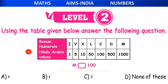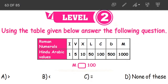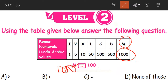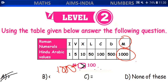Using the table given below, answer the following question. M dash 100 — we are comparing M with 100. M is 1000. Since 1000 is the bigger number, open your mouth towards 1000 — 1000 is larger than 100. So option A becomes our correct answer.